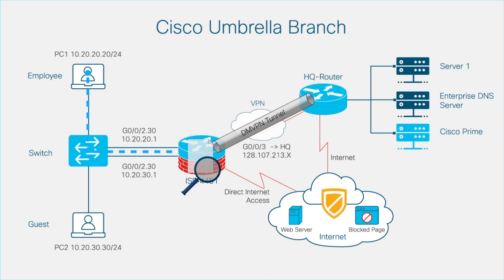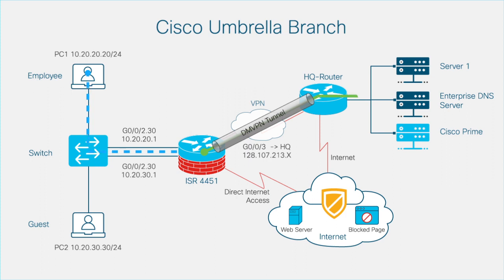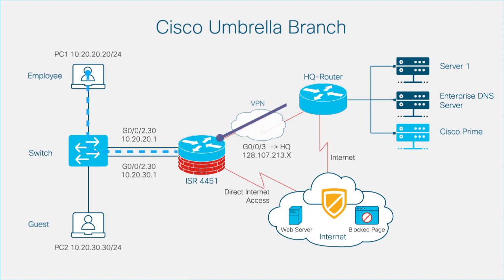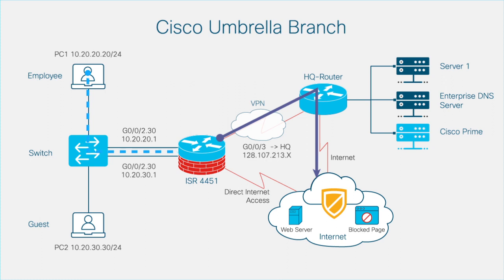When the client initiates traffic and sends a DNS query, the ISR 4451 intercepts and inspects the query. If it is a local domain query listed in the optional bypass list, the packet is not changed and is forwarded to the DNS server in the enterprise network. However, for an external domain query, the ISR 4451 changes the destination IP to that of the OpenDNS resolvers, adds the extended DNS records to the query, and forwards it to the Umbrella Cloud. Based on the device information in the extended DNS record, the Umbrella Cloud service applies different policies and sends back a response.